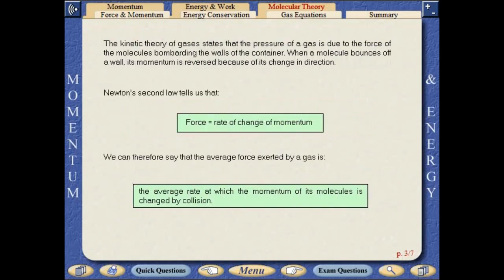The kinetic theory of gases states that the pressure of a gas is due to the force of the molecules bombarding the walls of the container. When a molecule bounces off a wall, its momentum is reversed because of its change in direction. Newton's second law tells us that force equals the rate of change of momentum. We can therefore say that the average force exerted by a gas is the average rate at which the momentum of its molecules is changed by collision.